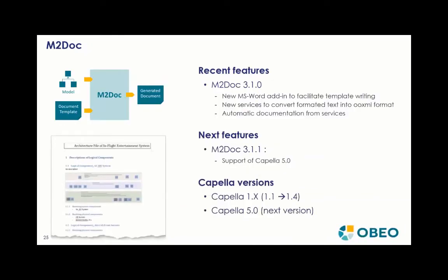M2Doc is the free-to-use open source solution to generate Word files from Capella models. There is a new version 3.1 with new add-ins in Word to facilitate template writing, new services to convert formatted text into OOXML format, and automatic documentation from services. There will be a version 3.1.1 supporting Capella 5.0 and all other Capella versions.